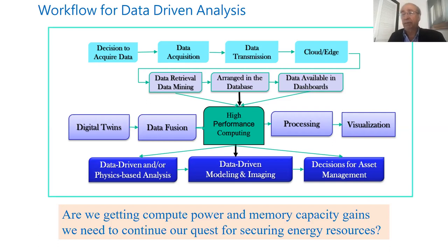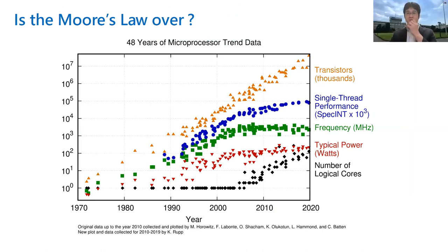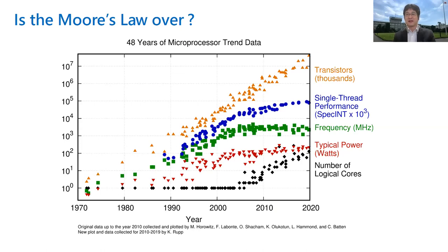Fred, thank you, let me take over. As Fred said, we need more and more compute power, but I often hear that performance has reached a plateau. It's been a while since people started to say Moore's Law is coming to an end. Is this true? Well, if you look at this chart, you can see the number of transistors — the orange dots — continue to grow. But the blue dots show that thread performance has reached a plateau.